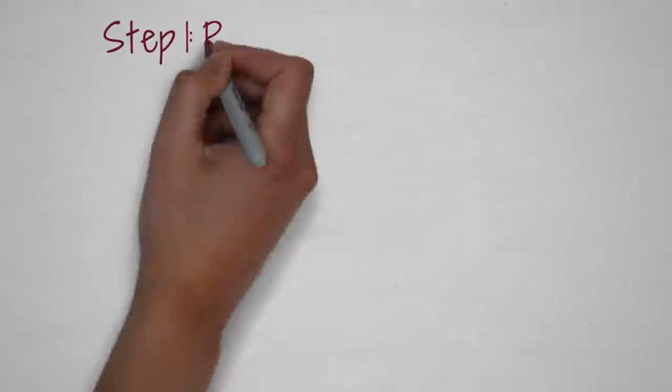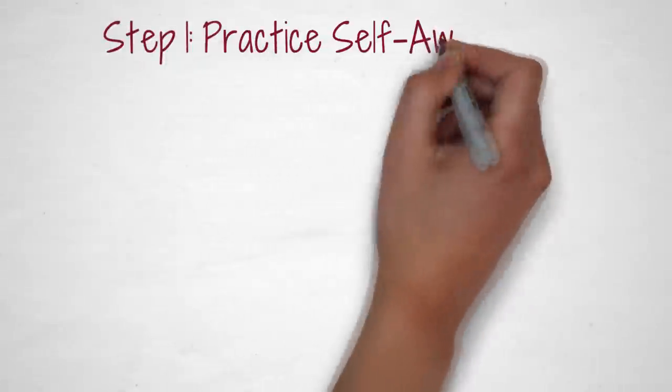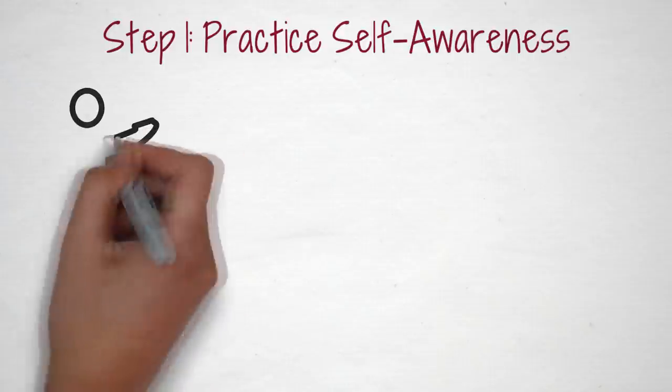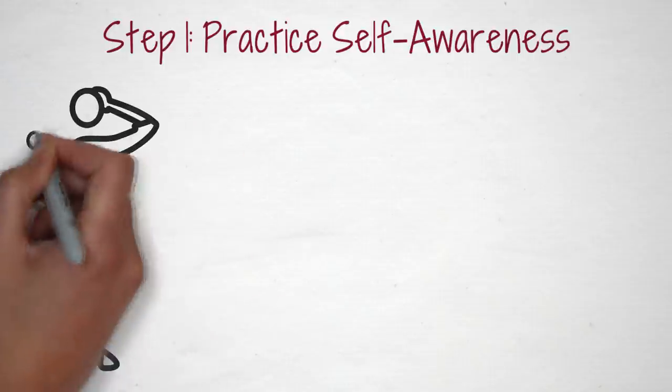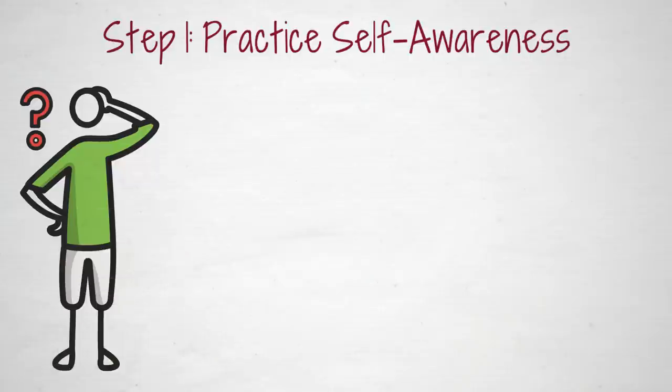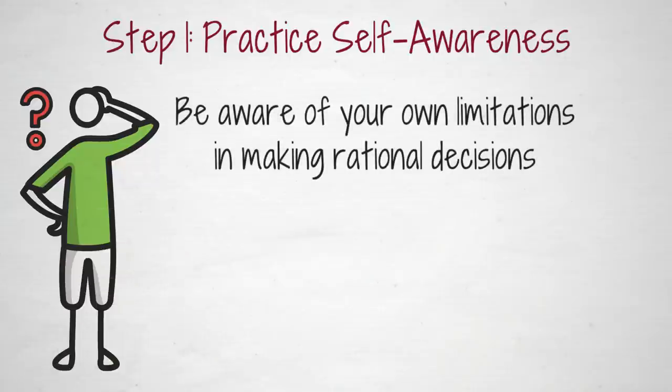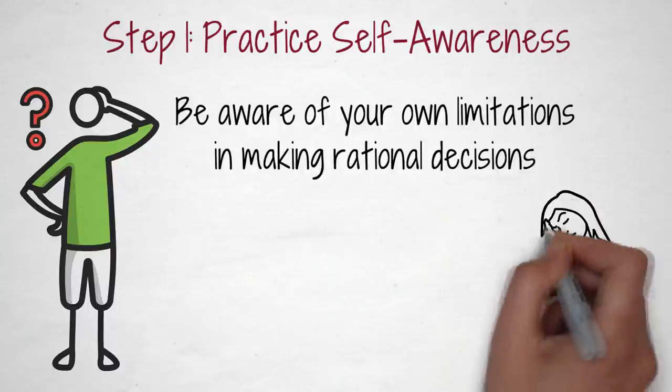Here are two simple steps to help you avoid making bad decisions. Step 1: Practice self-awareness. You can't change what you don't know exists. This is why being aware of your own limitations in making rational decisions is so important.